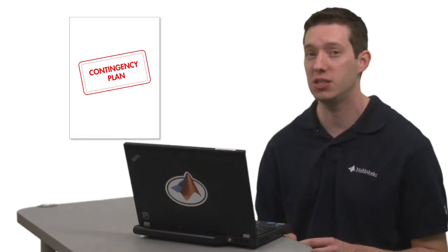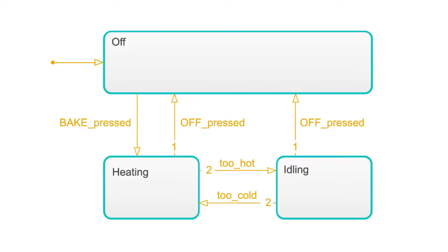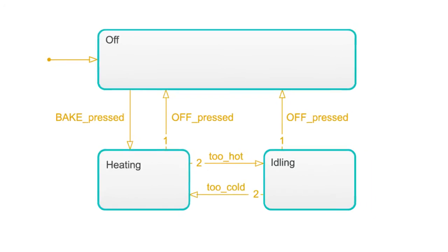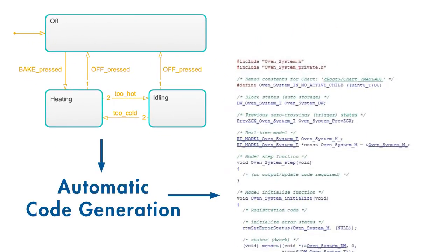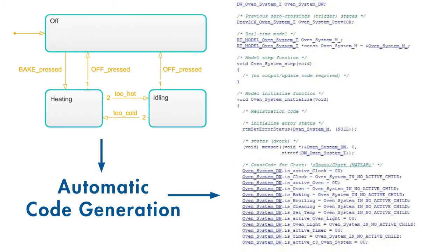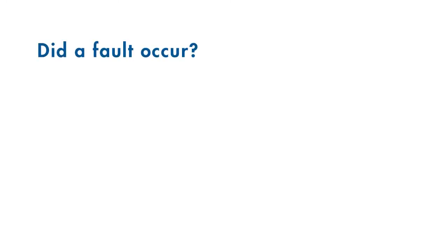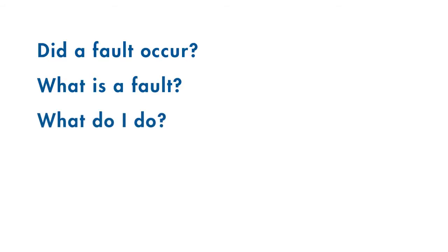We can use state machines simply to model and understand fault management systems, or in the case of software, we can use them as a starting point for the design process. It turns out that state machines work well as a template for fault management because they enable us to clearly define when a fault occurs, compartmentalize system behavior before and after the fault, and immediately switch between these modes of operation when we need to.